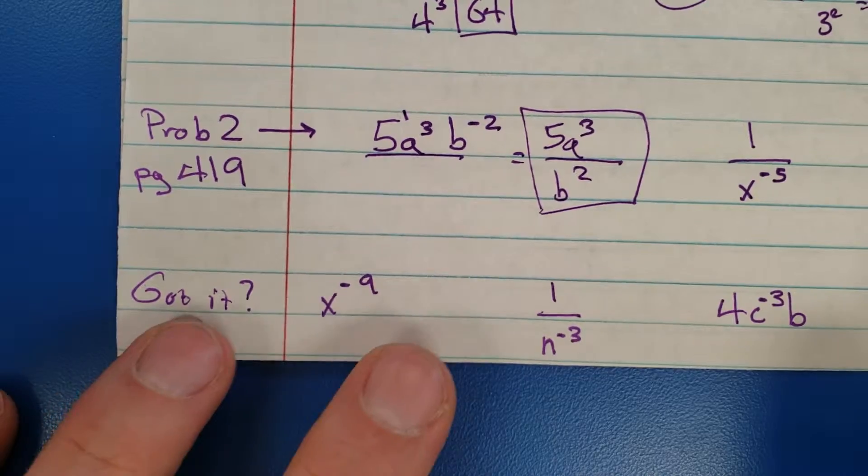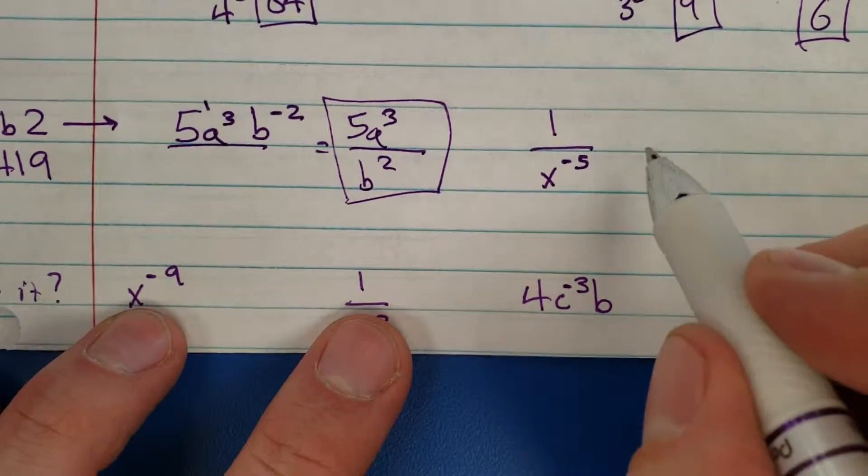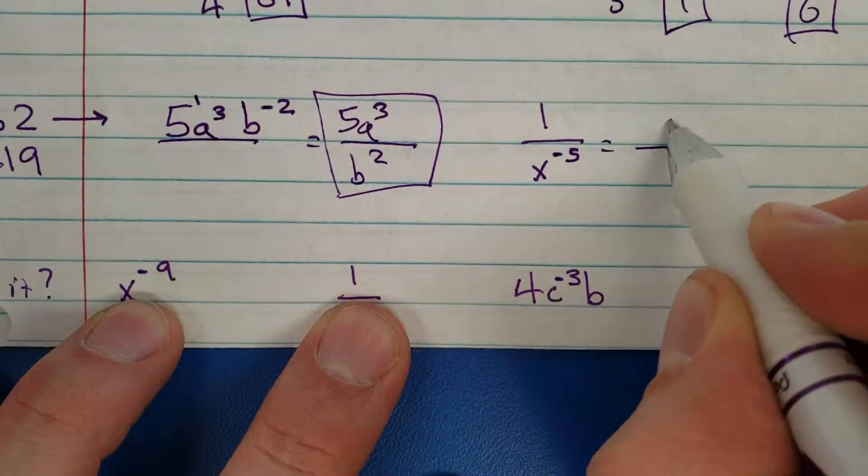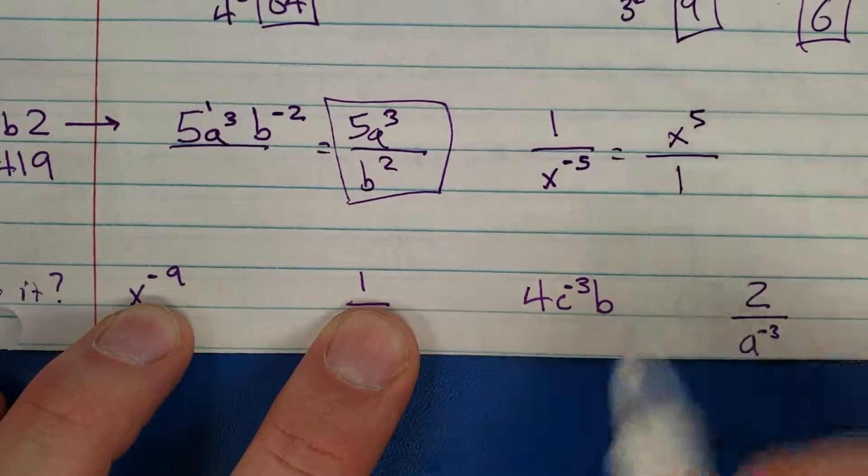Leave it alone if it's negative, it moves. If it's positive it stays. Okay, start with a blank fraction bar. You're negative down here, that means you got to move up. There's nothing left on the bottom.